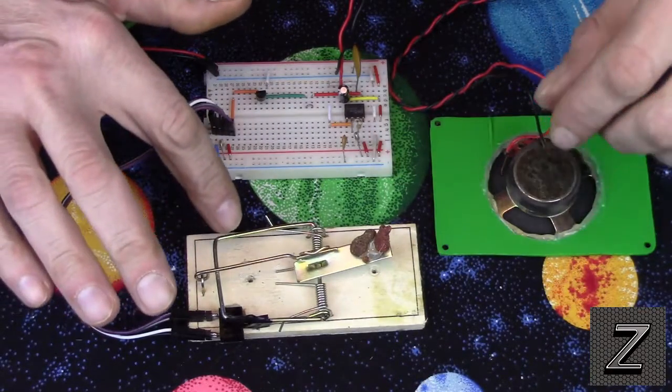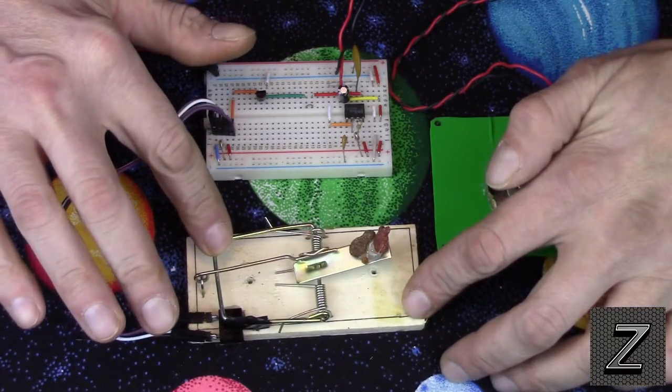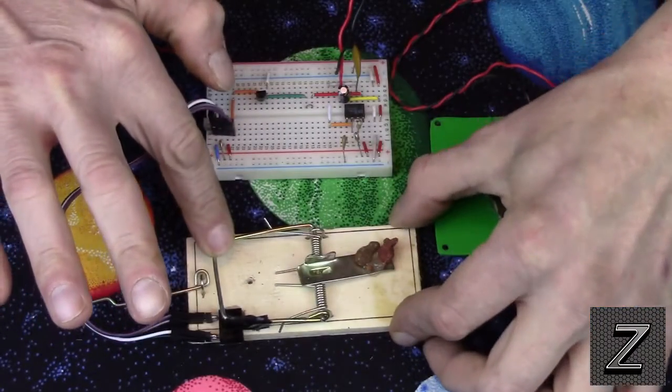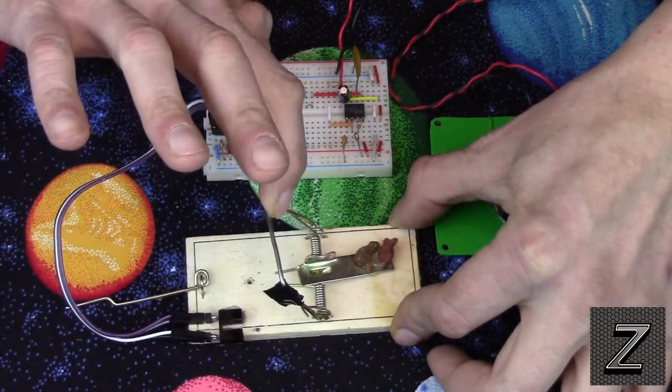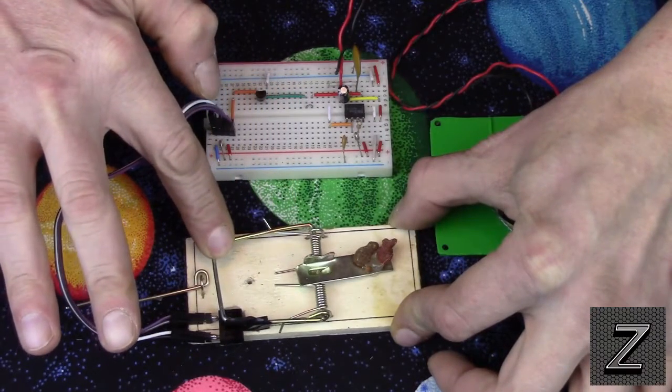All right. What we'll do next here is I'll show you it working. So, I got it powered up and I'm just going to trigger the trap. There we go. And then when you put that back down, the alarm goes off.